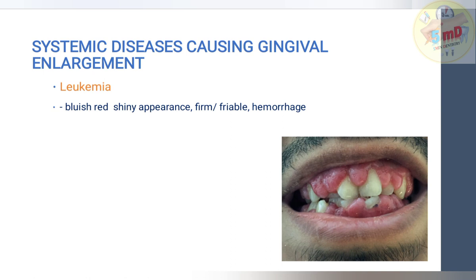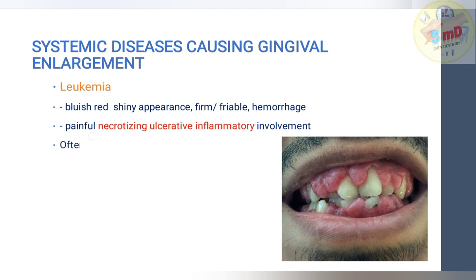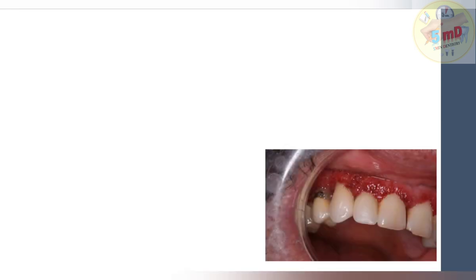Leukemia is one of the important conditions causing gingival enlargement. The gingiva shows a bluish-red shiny appearance and is firm or friable with hemorrhage. It is usually painful, and necrotizing ulcerative inflammatory enlargement involvement is seen. This is most often seen in acute leukemia, particularly acute myeloid leukemia types M4 and M5.